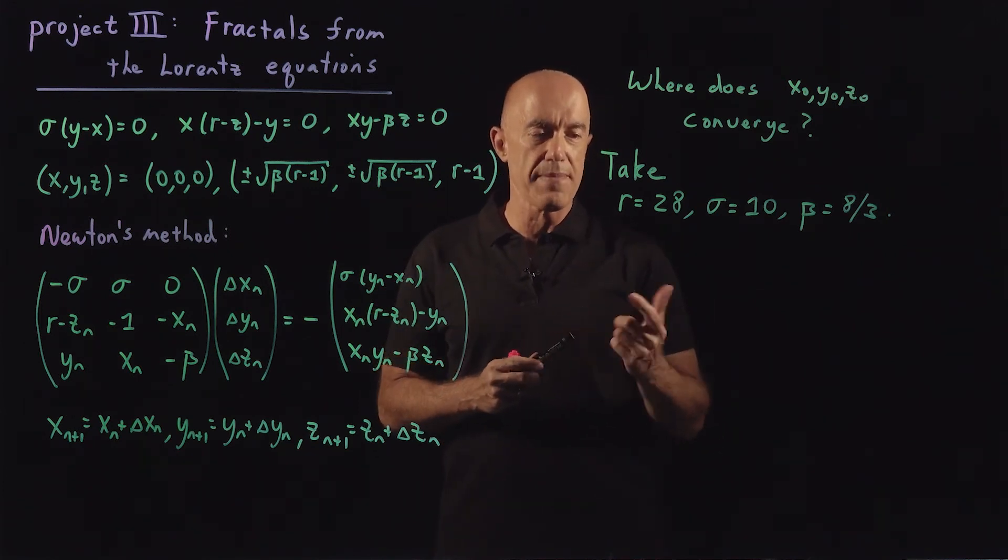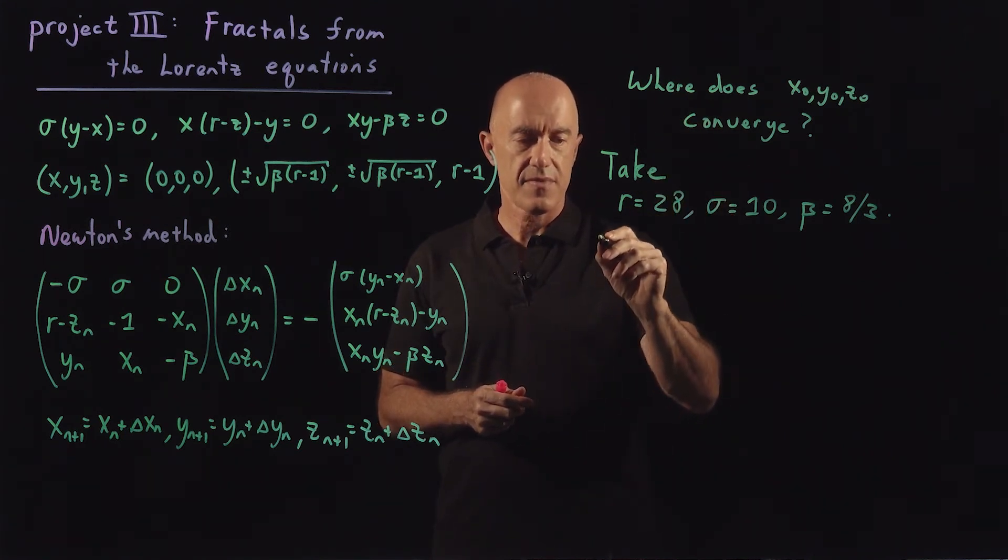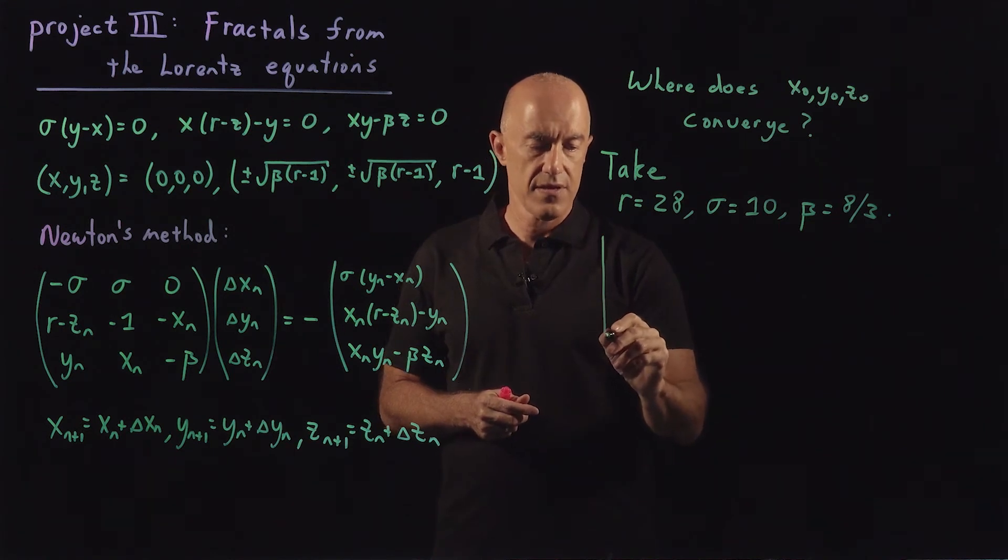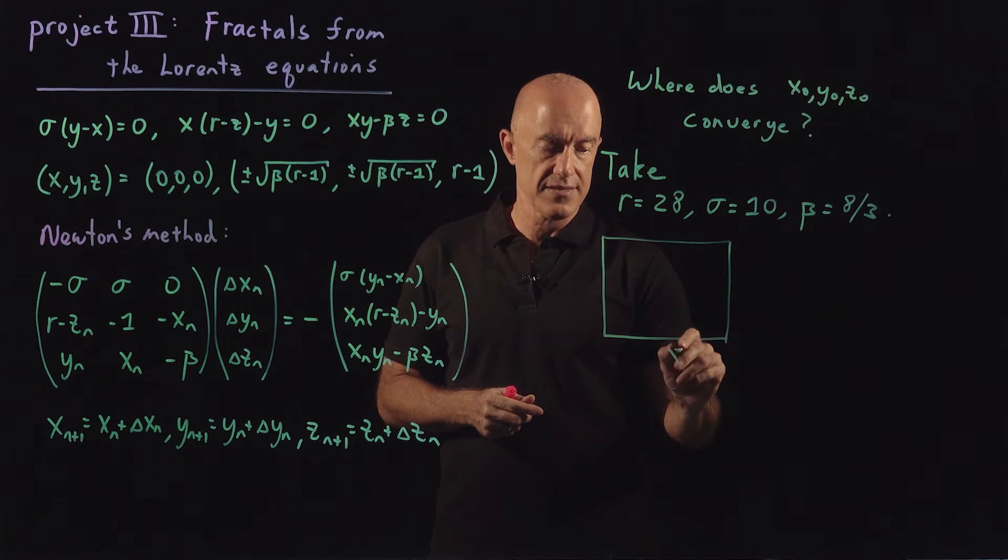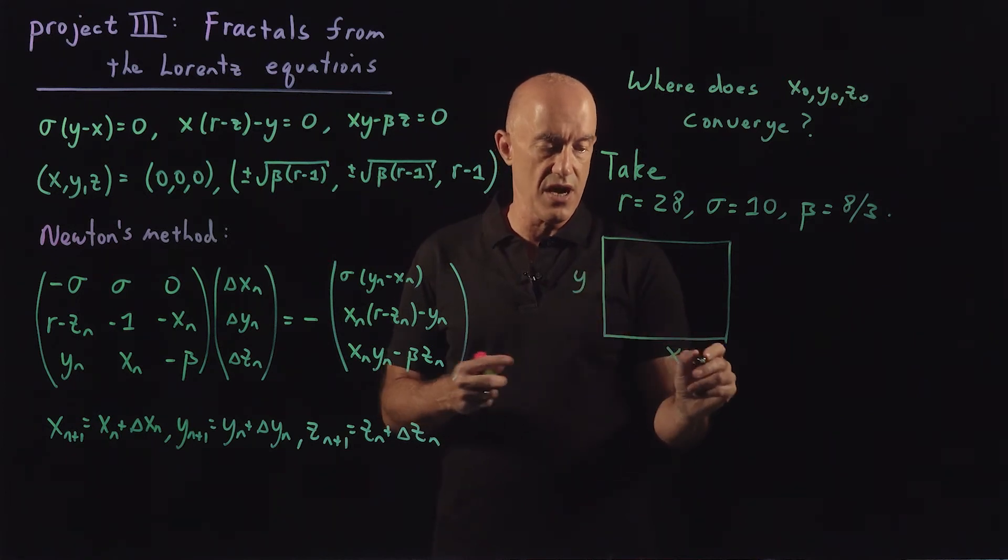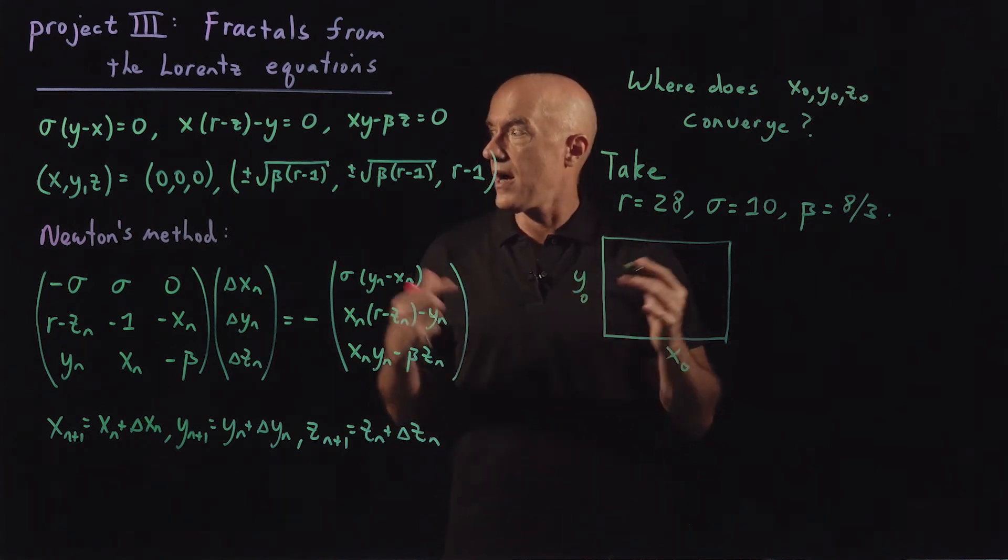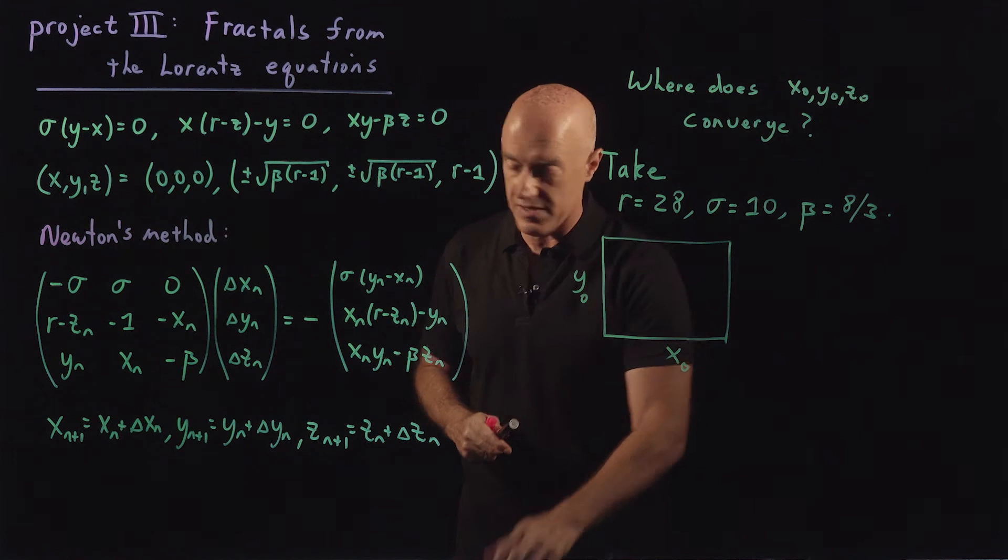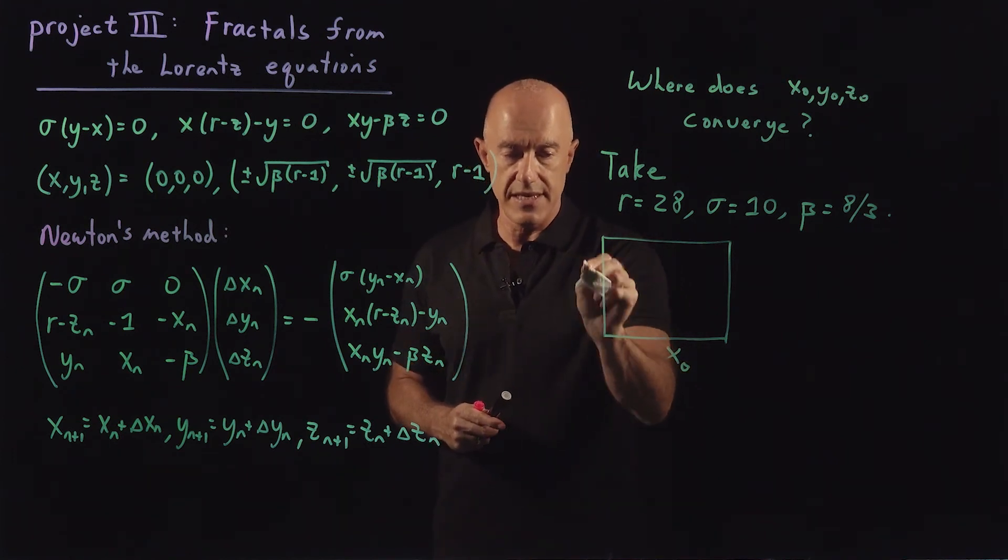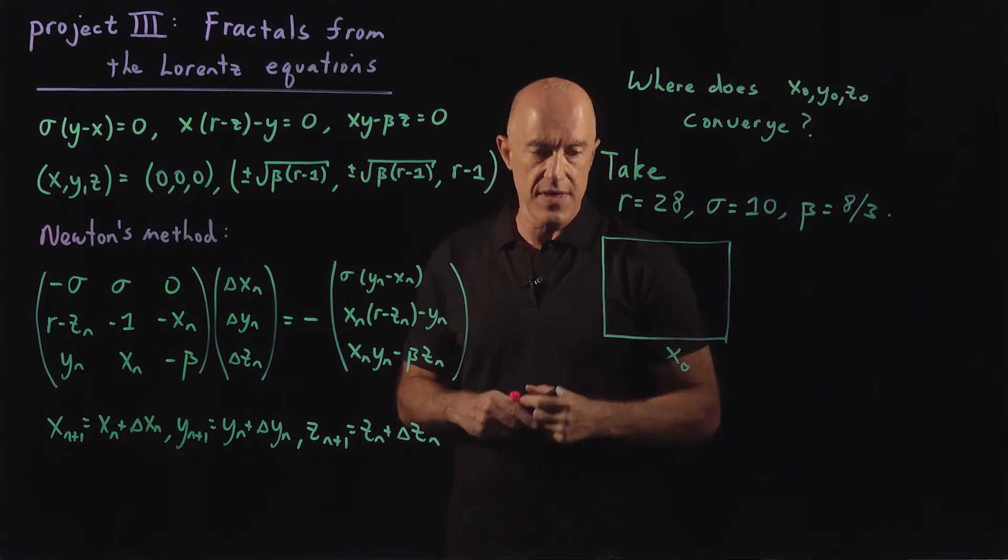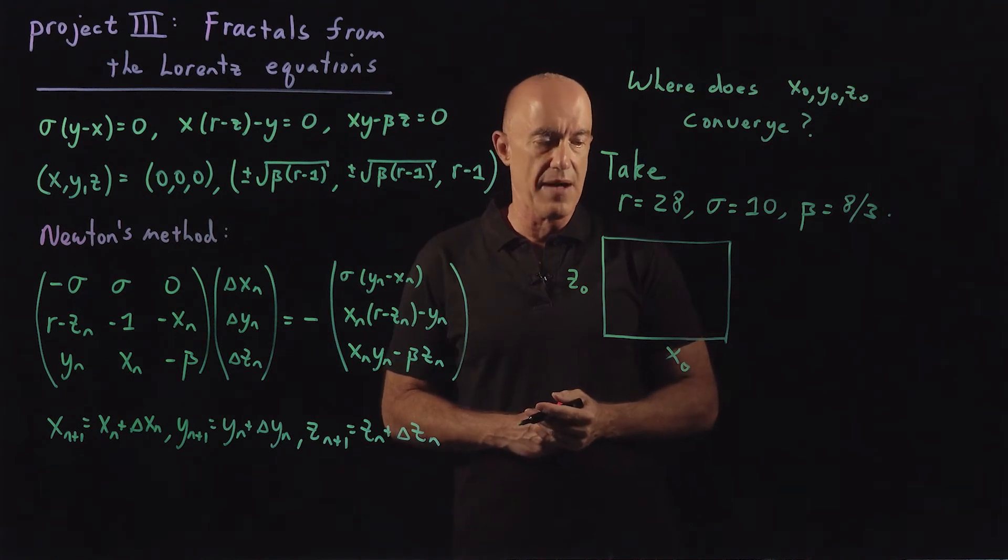Okay? We're going to map the x, y plane. So we're going to have a graph where this will be x and this will be y. So these are starting values, x naught and y naught. We're actually, instead of x, y, we're going to map x, z. Because I found that the picture turns out to be more interesting if we map x, z.